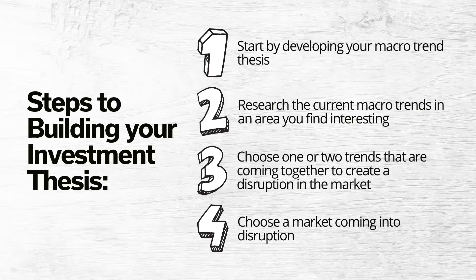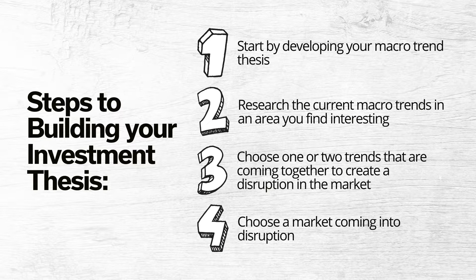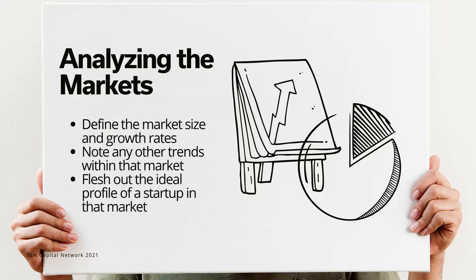Start by developing your macro trend thesis. Research the current macro trends in an area you find interesting. Choose one or more trends that are coming together to create a disruption in the market, and choose a market coming into that disruption. Look at that market and decide where money can be made. Startups do best when you enter at the point of disruption, where new technologies are moving from early adopters to mainstream users.